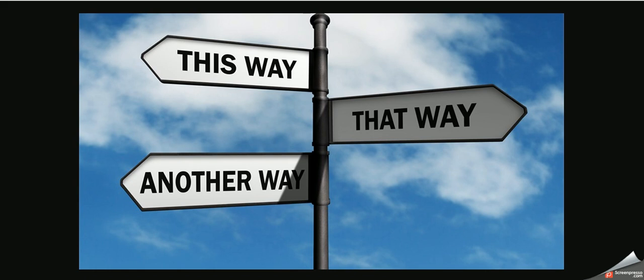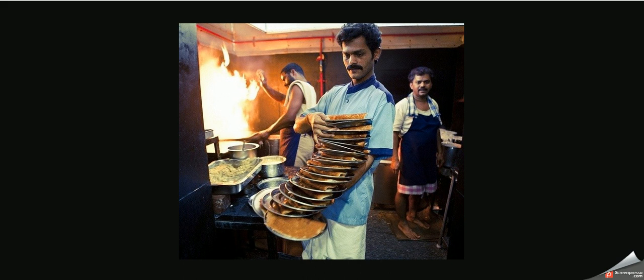Number two: the method of transmission. You see this waiter? Well, in some restaurants they have rules on how many plates a waiter is allowed to take at the same time to the table. This guy can obviously cope with lots of plates at the same time. So the second factor is the method of transmission — how many bits of data are sent to the other computer at the same time.